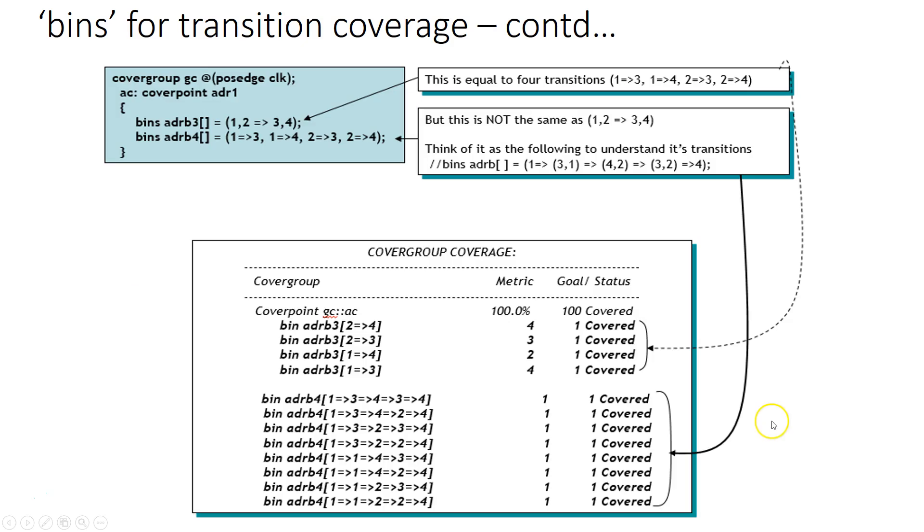Let's look at some more examples. This example I just want to make sure how the transition semantics actually works. So in this cover group GC we already saw bins where the transitions are specified as (1,2) and (3,4). And these means 1,2,3, then 1,2,4, then 2,2,3 and 2,2,4. These bins ADRB4 is not the same as the bins ADRB3. Do not confuse. Do not specify transitions as in ADRB4 if you want to have the transitions as specified in ADRB3.